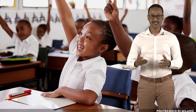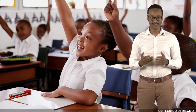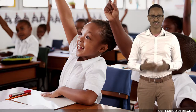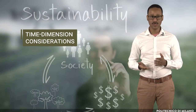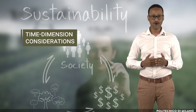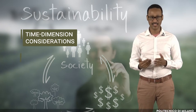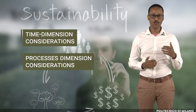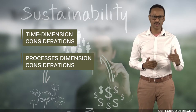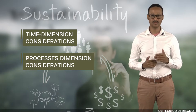Sustainable design of processes can be seen as the extension of design considerations in two dimensions: time dimension considerations, where the long-term future evolution of the process is factored into the design; and process dimension considerations, where in-depth knowledge about the interdependency nature of different processes is factored into design.